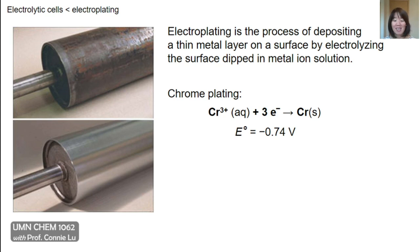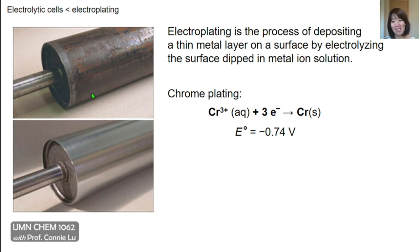Another application of electrolytic cells is electroplating, a process where you can deposit a shiny layer of metal on a metallic object by electrolyzing the object while it's dipped into a solution of the metal ion. Chrome plating, for instance, gives a beautiful shiny chrome layer that is also protective and will prevent rusting. Chrome plating has a simple half-reaction where Cr³⁺ ions are reduced by three electrons to form chromium metal. By looking at the standard cell potential, we see that it is indeed negative, so this reaction requires energy input in order to be run.